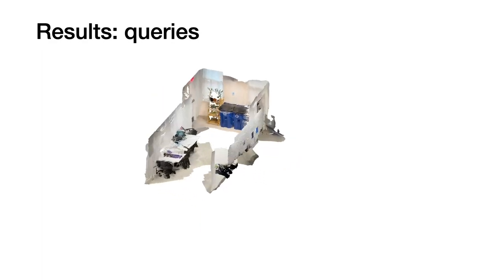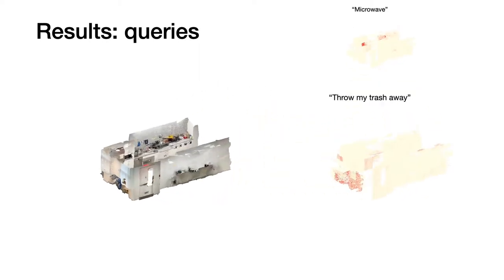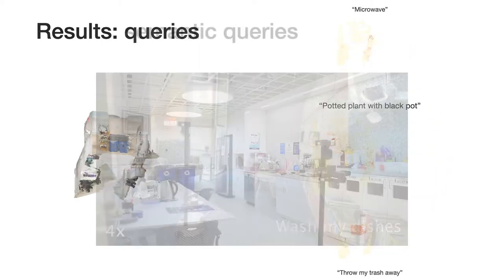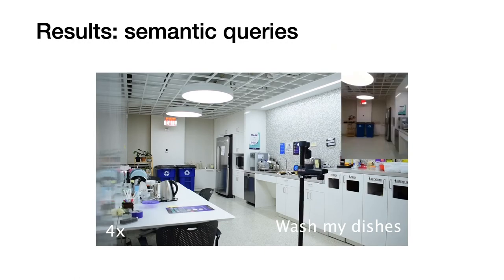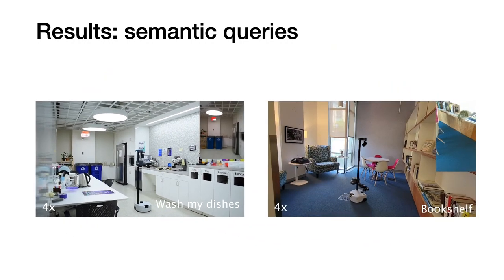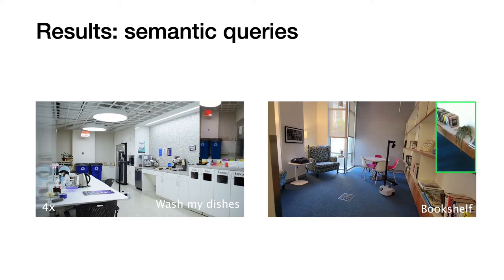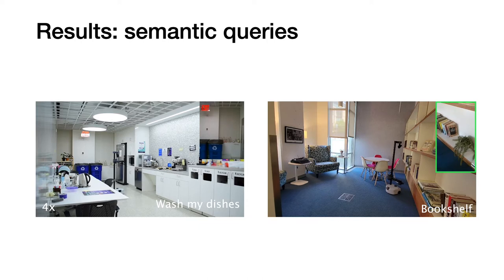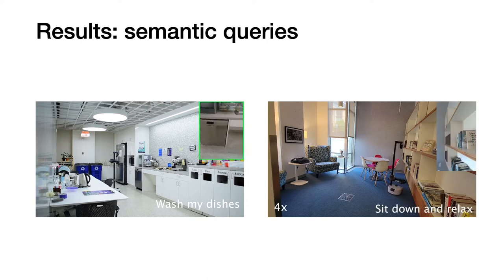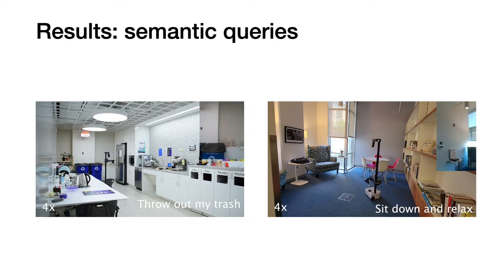Our trained ClipFields can be queried using natural language or images for literal, semantic, or visual queries. We train ClipFields in a kitchen and a library space and use them as a robot's semantic spatial memory to perform go-and-look-at tasks. We provide the robot with semantic queries such as 'wash my dishes' or 'throw away my trash' in the kitchen, and 'write a novel' or 'sit down and relax' in the library.